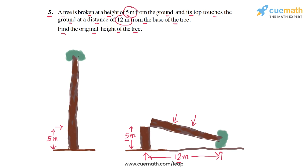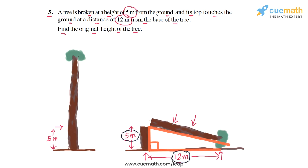What are the sides of that right triangle? We have the remaining part of the tree, which is one side of the right triangle. We have the ground, which is another side. Between the remaining part of the tree and the ground, a right angle is being formed. Then we have the part that broke off and fell to the ground — that is forming the hypotenuse of the right triangle. The hypotenuse is unknown, but the other two sides are known: 5 meters and 12 meters.